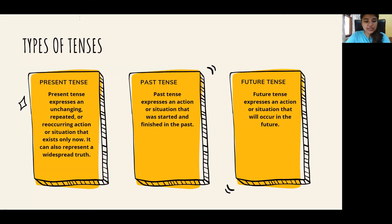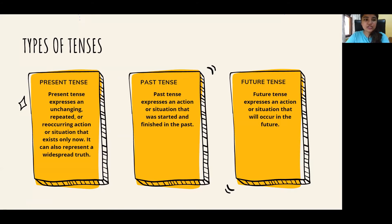For today's lesson, let's begin with the present tense. In each category we have simple, continuous, perfect, and perfect continuous. Note that continuous is the same as progressive — you may know it as progressive; they are the same thing for this lesson. First, we'll give a brief introduction to each of the tenses.